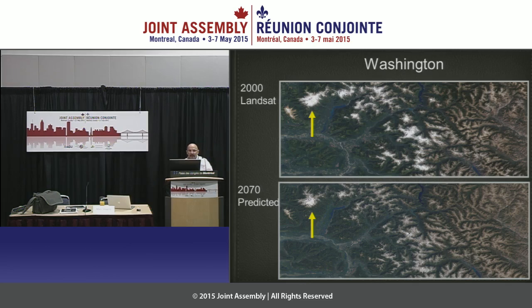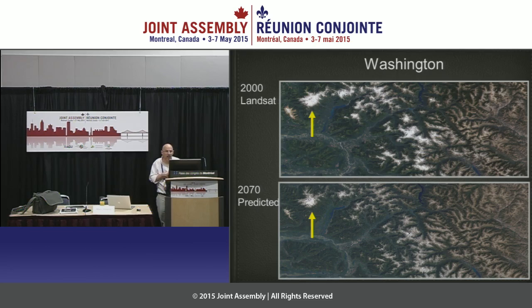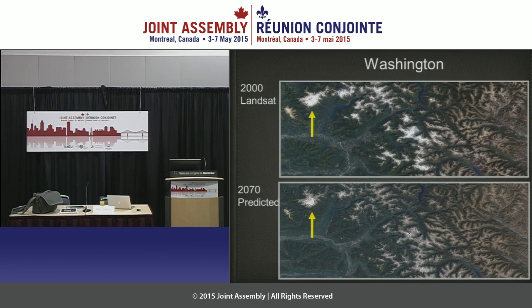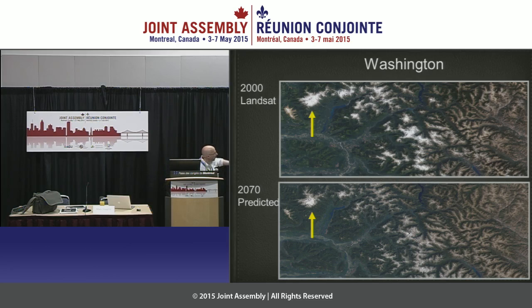The bottom image shows our predicted land cover for the year 2070. Comparing it to the top, you see a real drop — a decrease in the perennial snow cover all along that arc. This is our photorealistic rendering. In terms of snow cover change, there's about a 65 percent reduction in snow cover overall for this site.